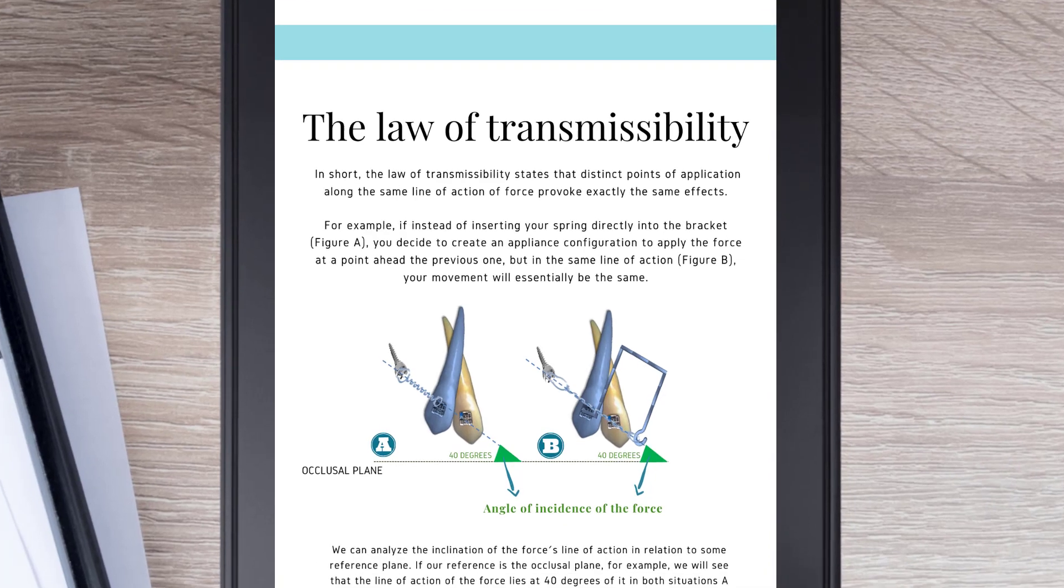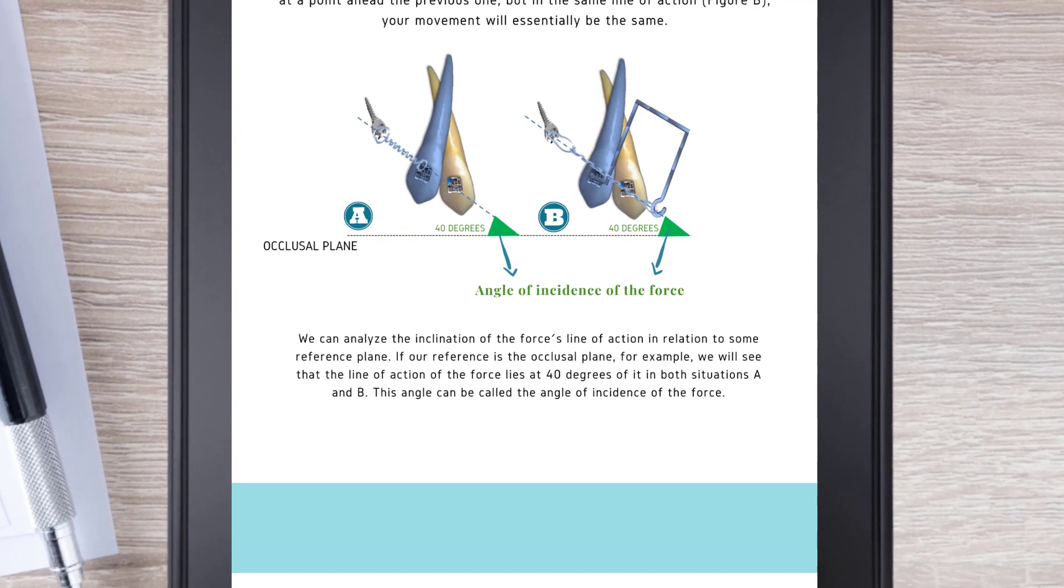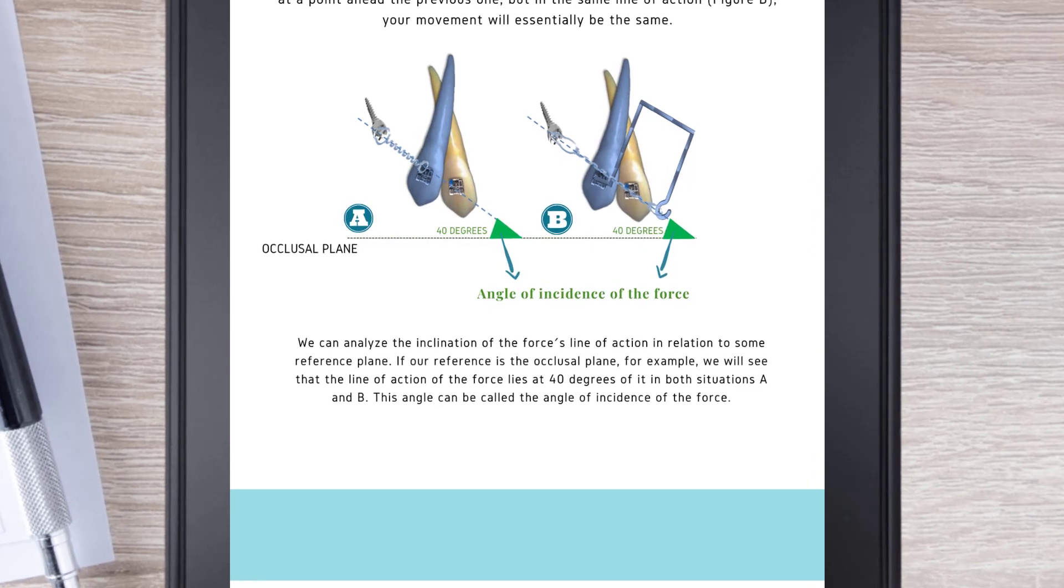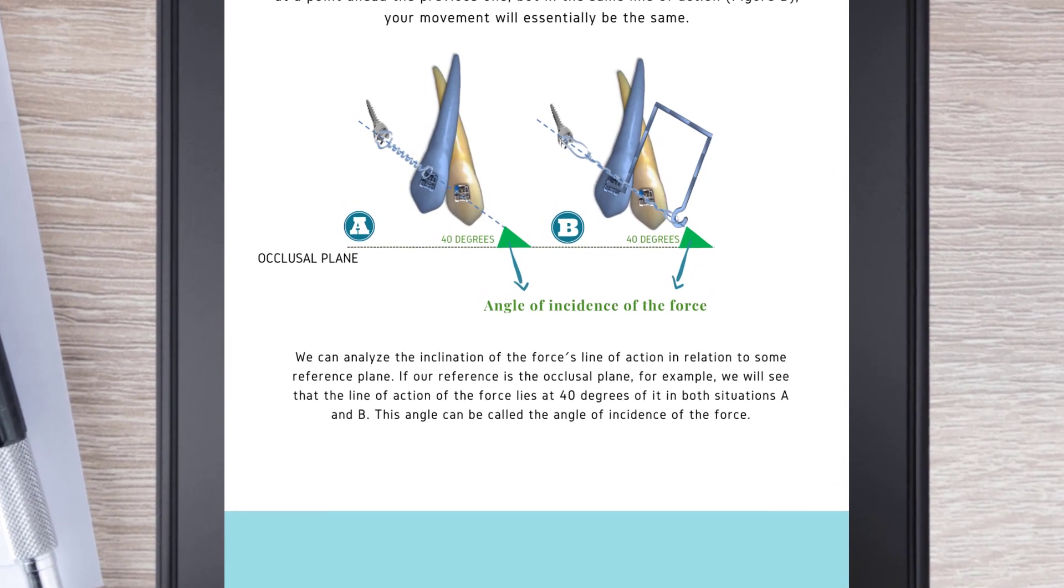We can analyze the inclination of the force's line of action in relation to some reference plane. If our reference is the occlusal plane, for example, we will see that the line of action of the force lies at 40 degrees of it in both situations A and B. This angle can be called the angle of incidence of the force.